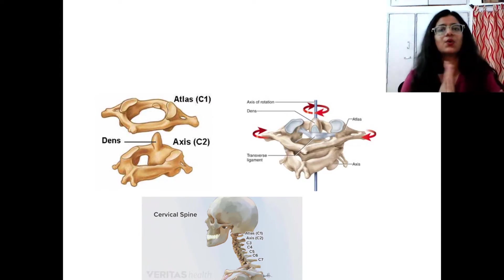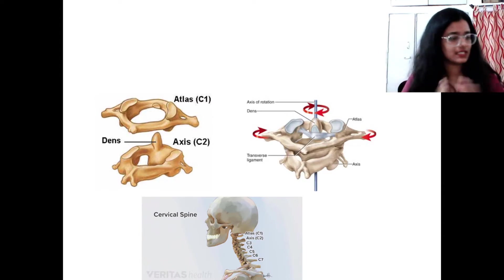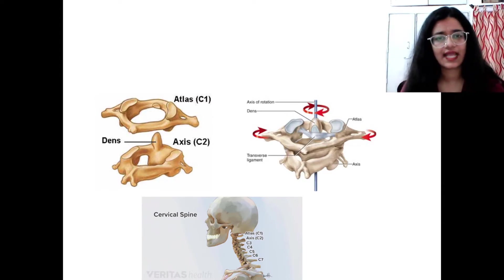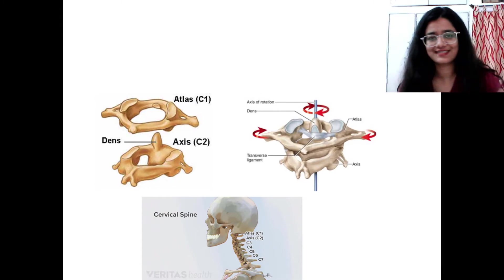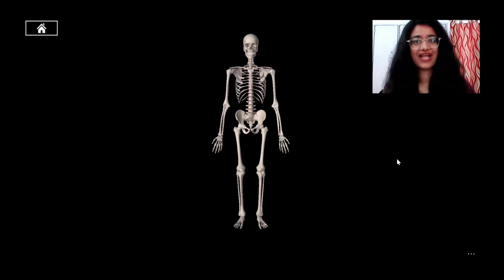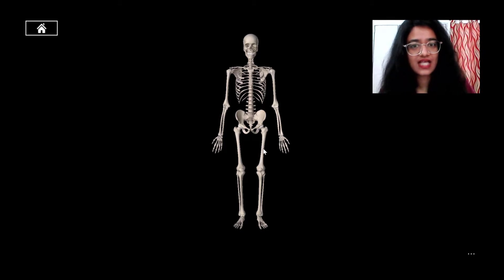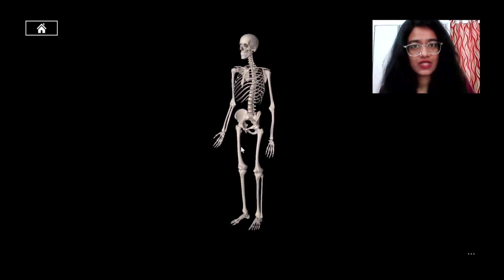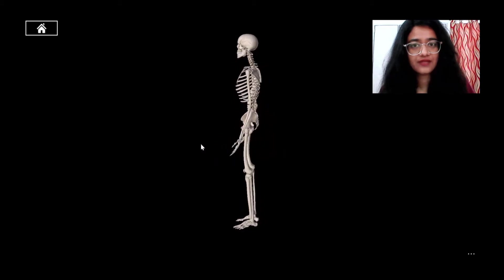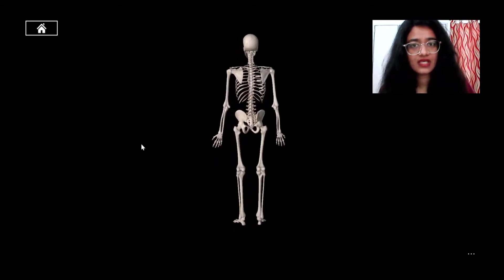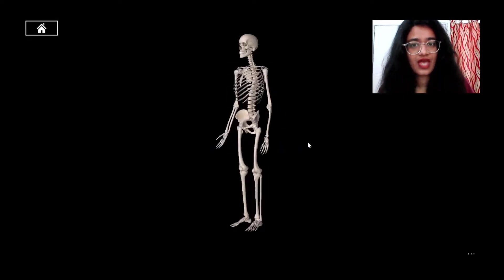Now let's begin with the 3D structure — I'm going to show you each and every bone in the 3D structure. You can see the skeleton here. Let me move it so you can see the dorsal side, the ventral side, and the lateral side, giving it a 360-degree view.